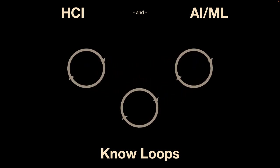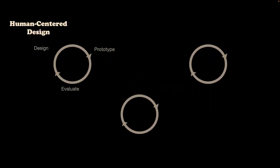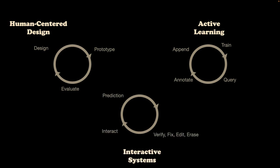In HCI, we often talk about human-centered design, where we design, prototype, and evaluate. In ML, we talk about active learning, where we train a model, figure out what examples might mess it up, collect and annotate that data, append it to retrain the model, and make it better. In interactive systems, we're often interacting with the ML — it makes predictions, people verify, edit, or erase what it's done, and then we go back and do it again. All of these simplistic loops think a lot about convergence, converging towards our solution.